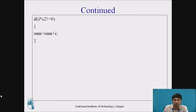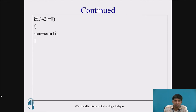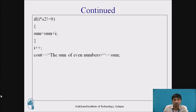2 is less than or equal to 11 — true condition. But 2 modulus 2 is not equal to 0 is false, since 2 is exactly divisible by 2 — it is an even number, so it does not enter the loop and sum remains 1. i increments to 3: 3 ≤ 11 is true, and 3 modulus 2 ≠ 0 is true — odd number — so sum = 1 + 3 = 4. This repeats, and the sum of all odd numbers up to 11 is displayed. Input: n = 11, Output: 36.